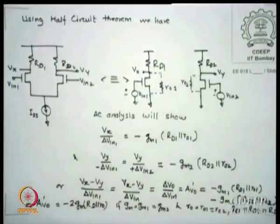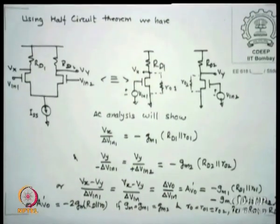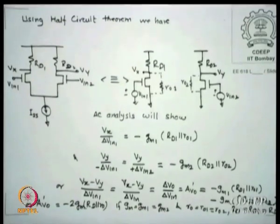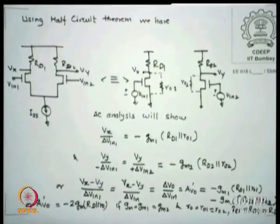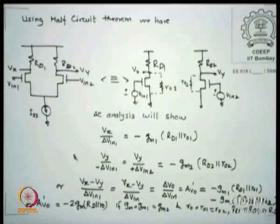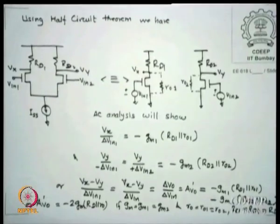Similarly, the other side gives Vy equal to minus gm2 times (rd1 parallel rd2). Subtracting gives gm1 times (rd1 parallel ro1). When ro1 equals ro2, rd1 equals rd2, and gm1 equals gm2, this reduces to 2·gm·rd, and since rd is normally smaller than ro, it is equivalently 2·gm·ro — nothing extraordinary appears.